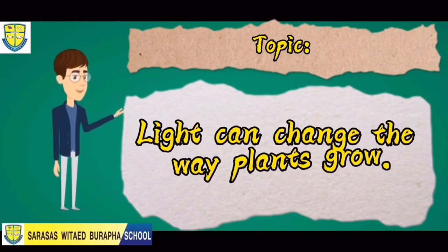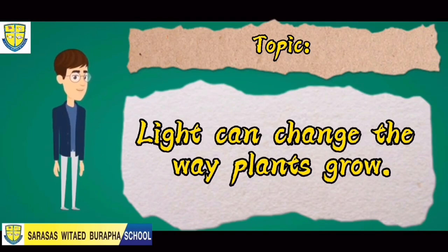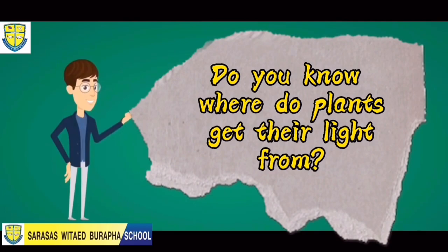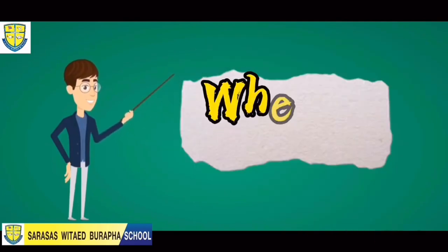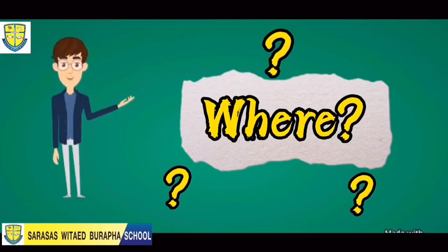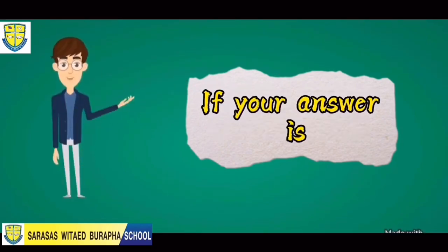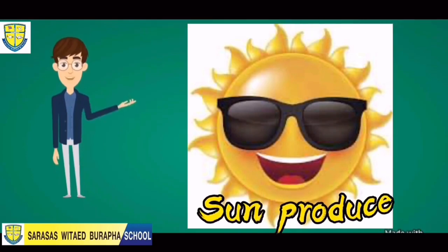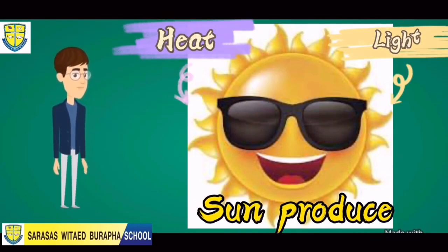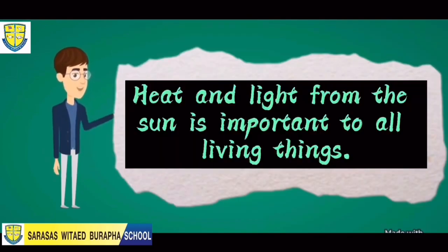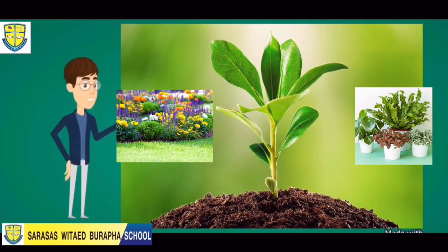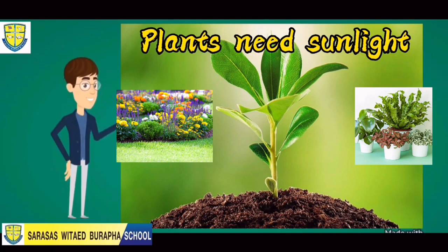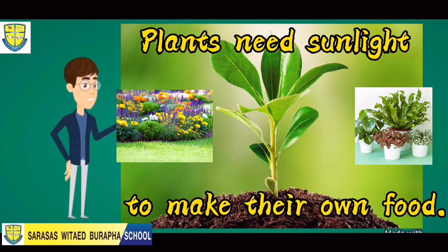Do you know where plants get their light from? Do you have any idea where plants get their light? If your answer is from the sun, your answer is correct, because the sun is the one that produces heat and light for the Earth. That heat and light from the sun is very important to all living things, especially to plants, because plants need sunlight to produce their own food.